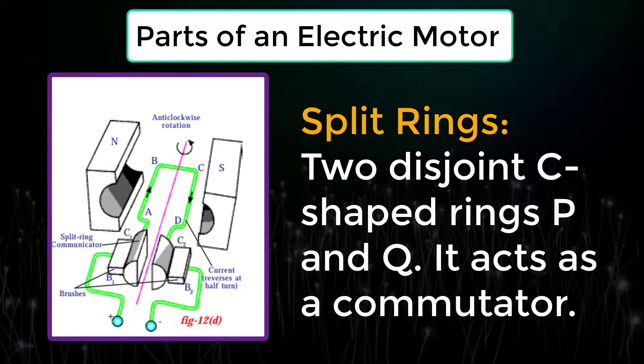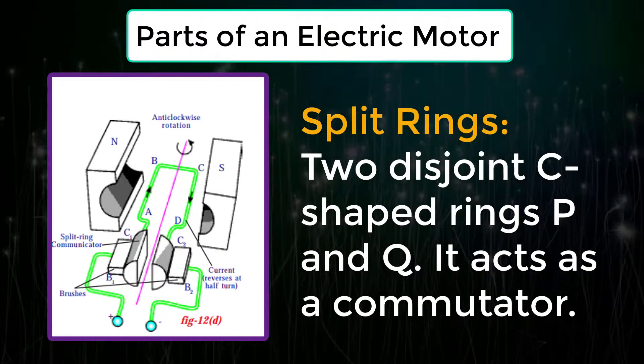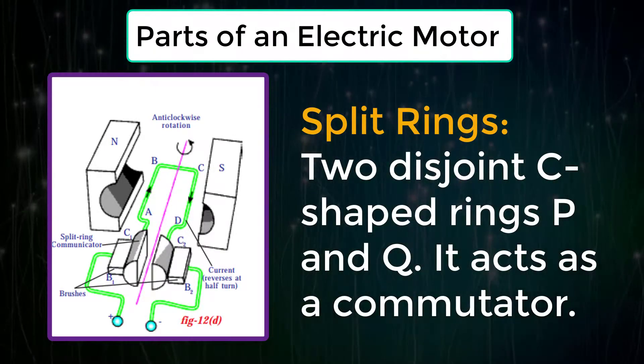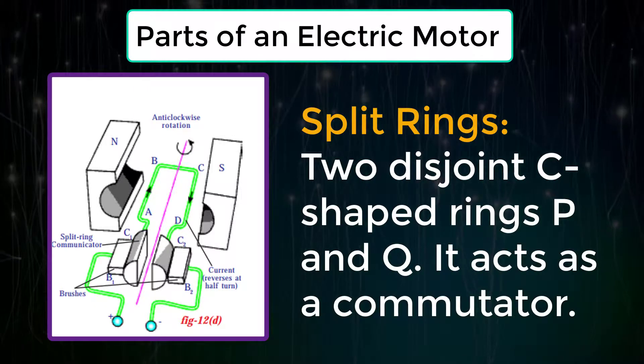Split rings: Two disjoint C-shaped rings P and Q. It acts as a commutator which can reverse the direction of current.